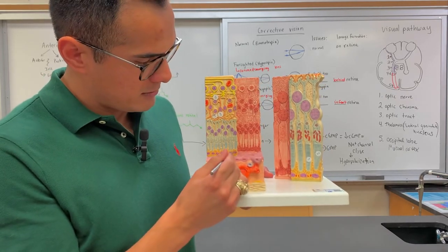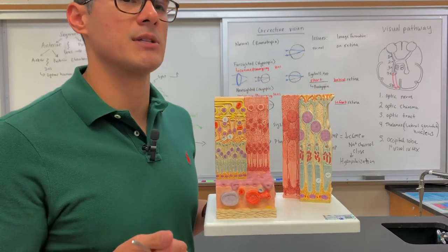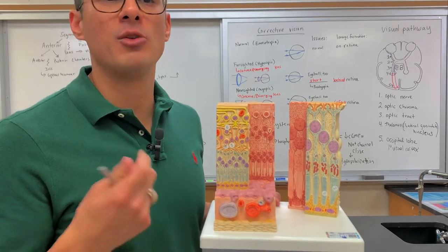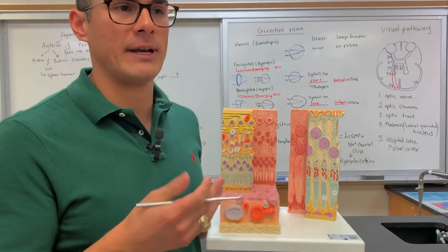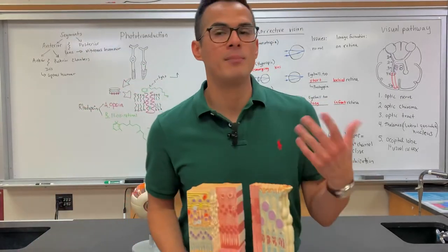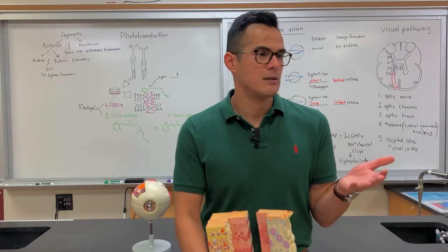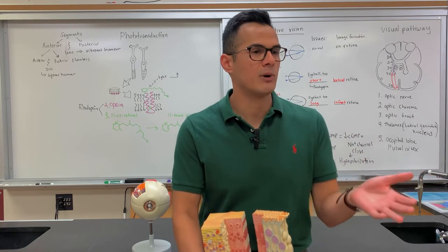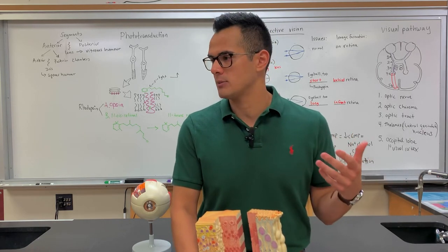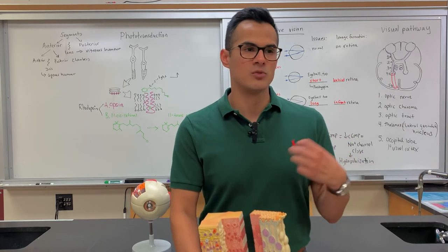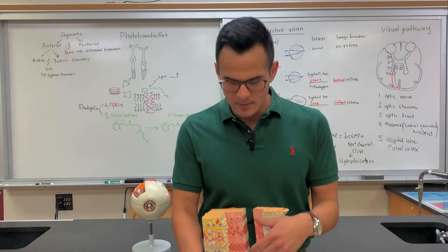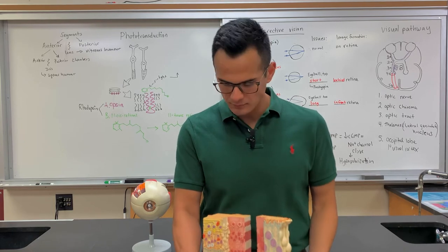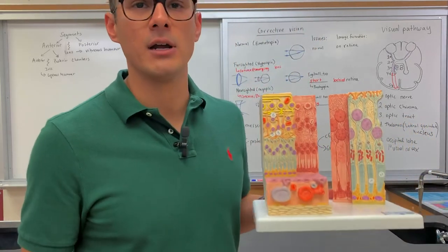These are the rods and the cones. What the pigment secreting cells do is secrete melanin and also vitamin A. Both of these are essential for proper vision. Melanin helps to absorb light — think about wearing a black T-shirt when it's real hot: you get really hot because all of that light is being absorbed. That's what melanin does — it absorbs light so that all of these different photoreceptors can be activated.